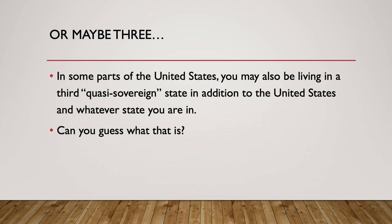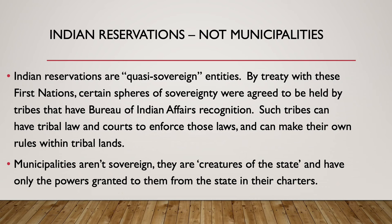In some areas of the country, you may actually live in three sovereign states, or at least there is a third quasi-sovereign state in addition to the U.S. and your state, like Vermont. Can you guess what that is? The third quasi-sovereign state in the U.S. is Indian reservations. Indian reservations are quasi-sovereign entities. By treaty with these first nations, certain spheres of sovereignty were agreed to be held by tribes that have Bureau of Indian Affairs recognition. Such tribes can have tribal laws and courts to enforce those laws, and can make their own rules within tribal lands.